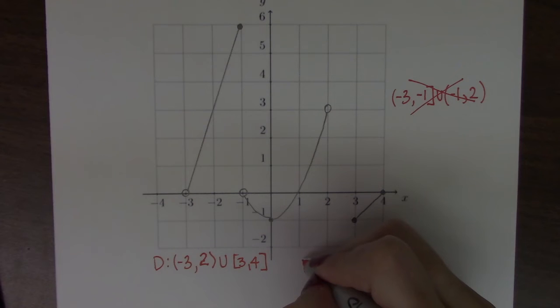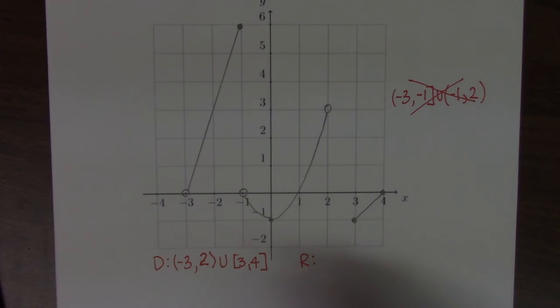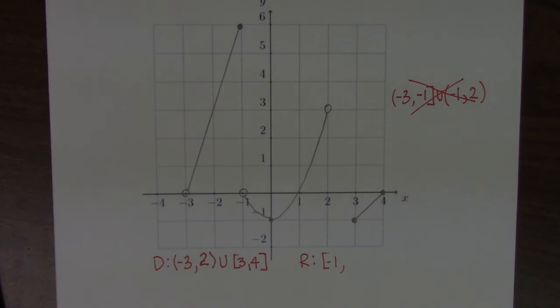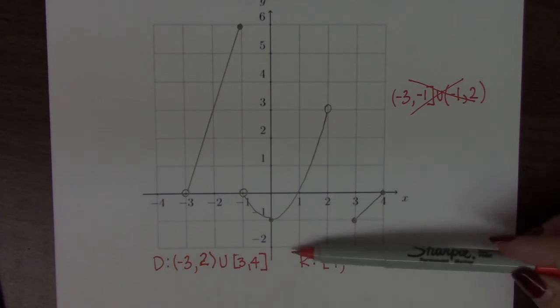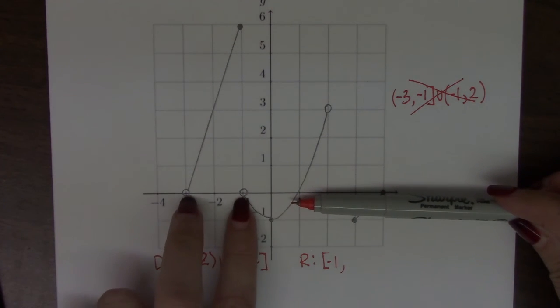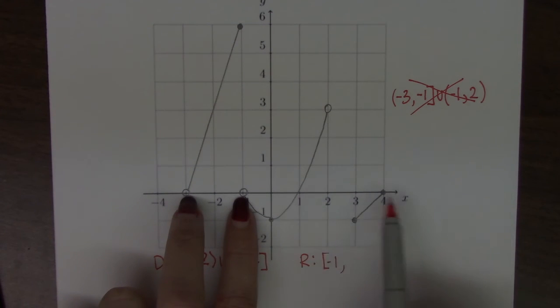Part C wants to know the range. So for the range, we read bottom to top of graph. So the first y value we encounter is down here at negative 1, and it's included. So that's going to be the beginning of our range. Then we keep going up. We've got values all the way to 0. We have some open circles here at 0, but I found two y values at 0. So 0 is absolutely in the range.